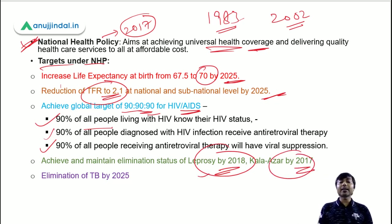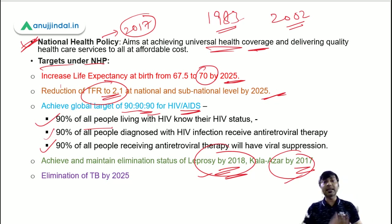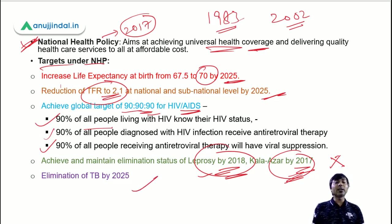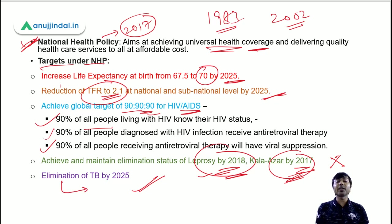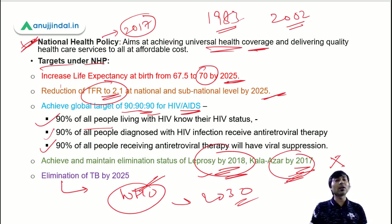These targets for leprosy and Kala-Azar have been missed by our government. The leprosy elimination target was extended to October 2019 but has still not been fully achieved, and same with the Kala-Azar. We have to eliminate TB by the year 2025, ahead of WHO's target of 2030.